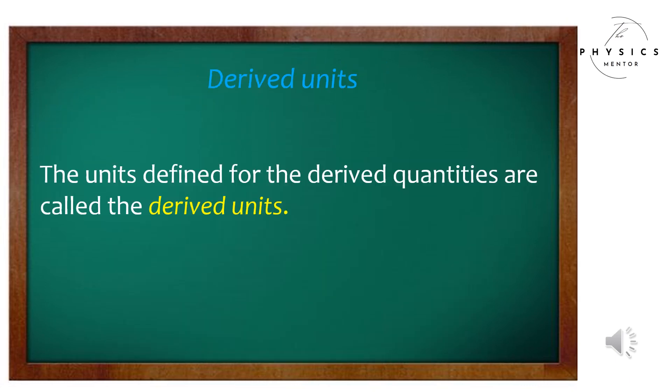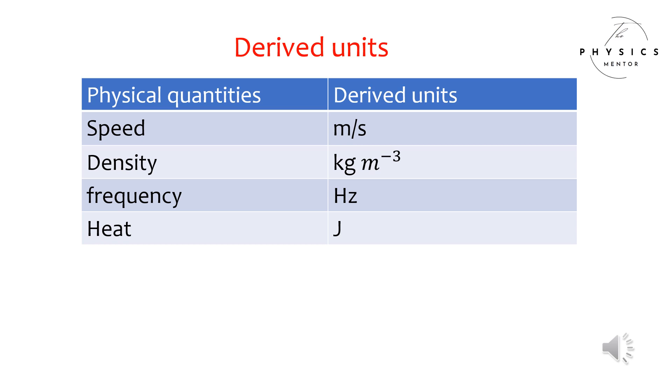The units defined for the derived quantities are called the derived units. Some examples of derived units are: speed (meter per second), density (kilogram per meter cube), frequency (hertz), and heat (joule).